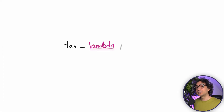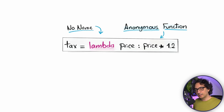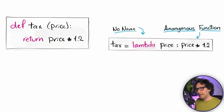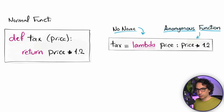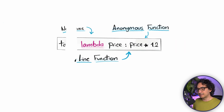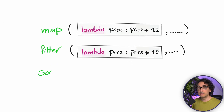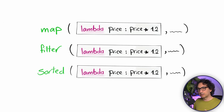The Lambda function is actually a tiny function without a name, and we also call it an anonymous function. So instead of building a whole function, we have a shortcut — with one line you can define a whole function. And you will see Lambda is used a lot together with other data structure functions like map, filter, and sort, in order to do extra complicated logic on top of your data structure like the list.